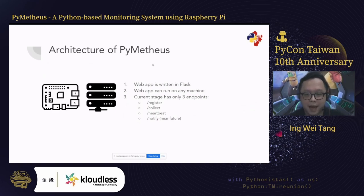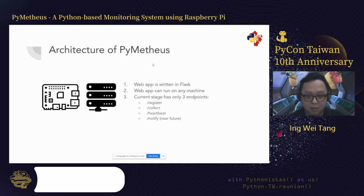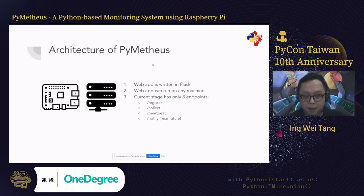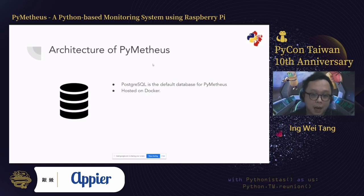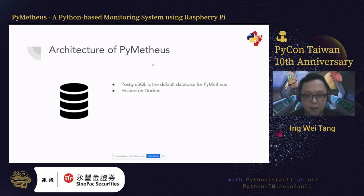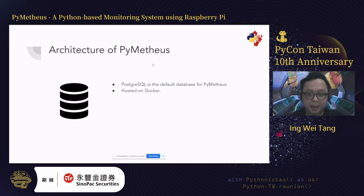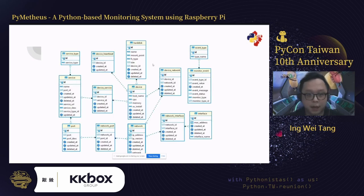The server web app has three REST endpoints: register, collect, and health. Notify is currently still under development. PostgreSQL is the default database, currently hosted on Docker. I haven't explored other databases like SQLite, MySQL, or MSSQL yet, so Postgres is the main one for now.